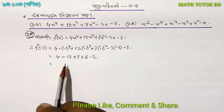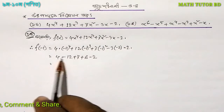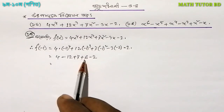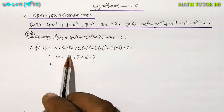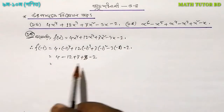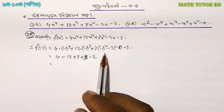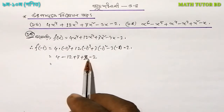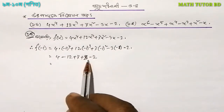So to write: plus 4, minus 12, plus 7, plus 3, minus 2. That gives us: 4 minus 12 is negative 8, plus 7 is negative 1, plus 3 is 2, minus 2 is 0. So f(minus 1) equals 0.